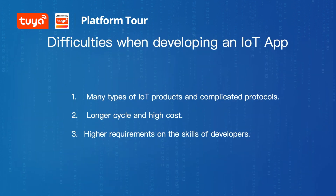Let's look at the difficulties of developing an IoT device from scratch. First, there are many types of devices on the market, and each device has its own communication protocol and method, which requires higher app capabilities. Second, developing IoT devices involves the development of hardware devices and communication protocols, so there are high requirements for the skills of developers. These reasons lead to long development cycles, high costs, and difficult debugging of IoT products.